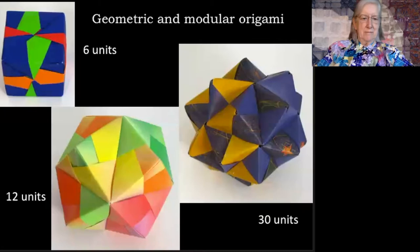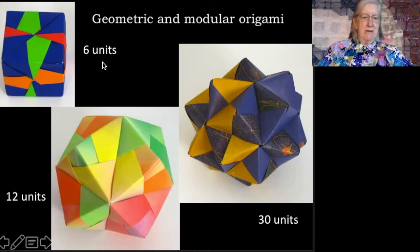I myself much enjoy the geometric and modular origami and this is an example of how we can fold a simple unit from a piece of paper and then if we make six of them we can put them together to make a beautiful cube. If we make 12 we can produce a stellated octahedron and if we make 30 we can make a stellated icosahedron.